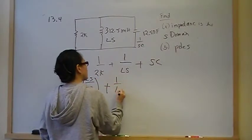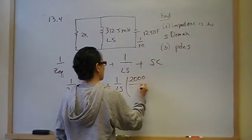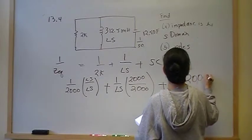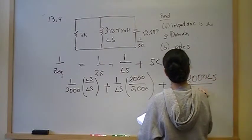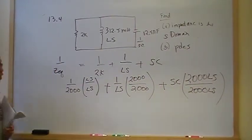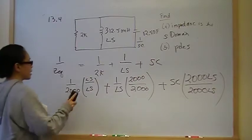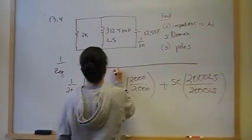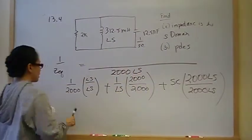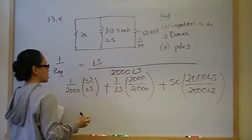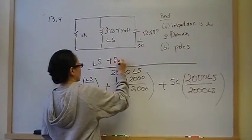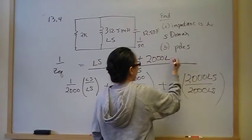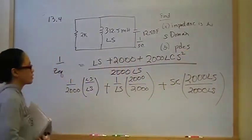Plus SC — this term is missing a 2000LS. Now everything has the common denominator 2000LS, so everything is over 2000LS. The first term becomes LS, the second term becomes 2000, and the third term becomes 2000LC·S squared. So now we have a polynomial in the numerator.